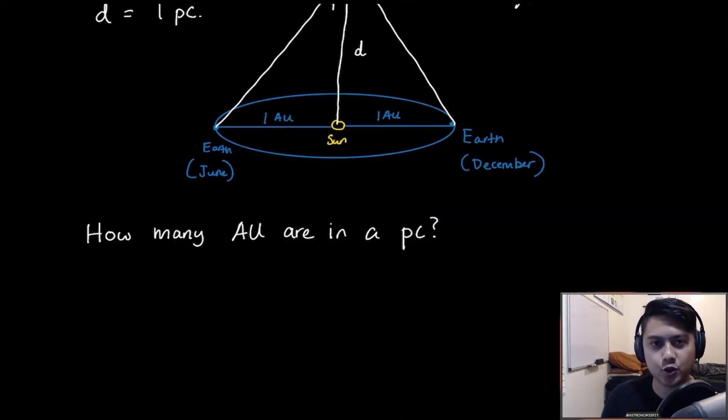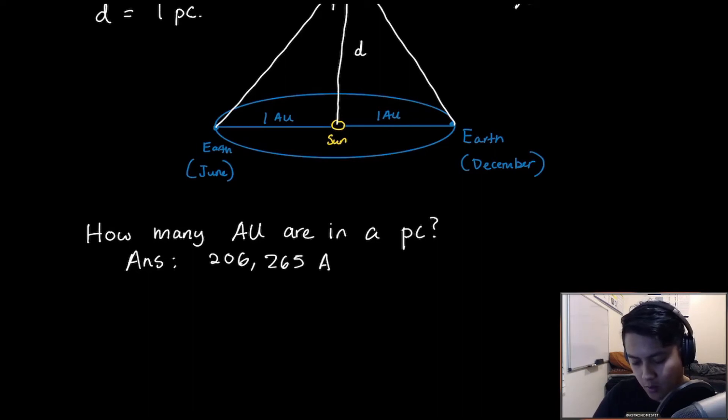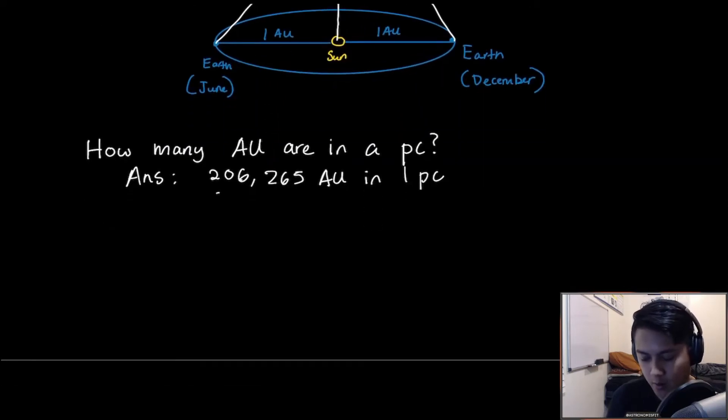One final thing that I want to address is how many astronomical units are in one parsec. I'm going to give you the answer, and then I'm going to show you how you derive it. The answer to this question is there are 206,265 AU, just about, in one parsec. But 206,265 is a number that is constantly drilled into our heads when we study astronomy. So I'm going to show you how you get this number.